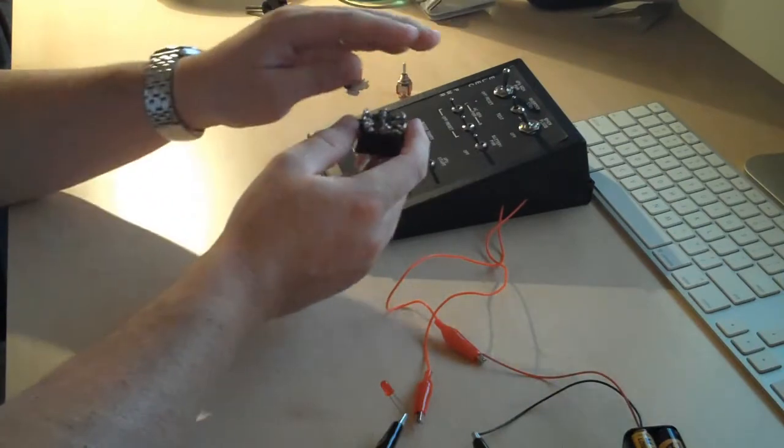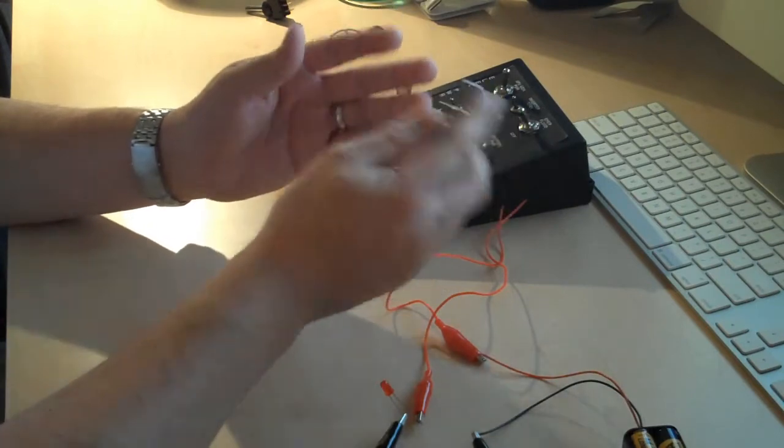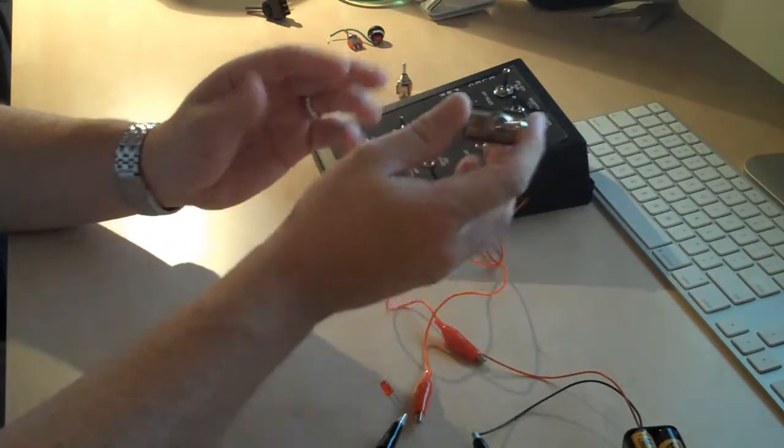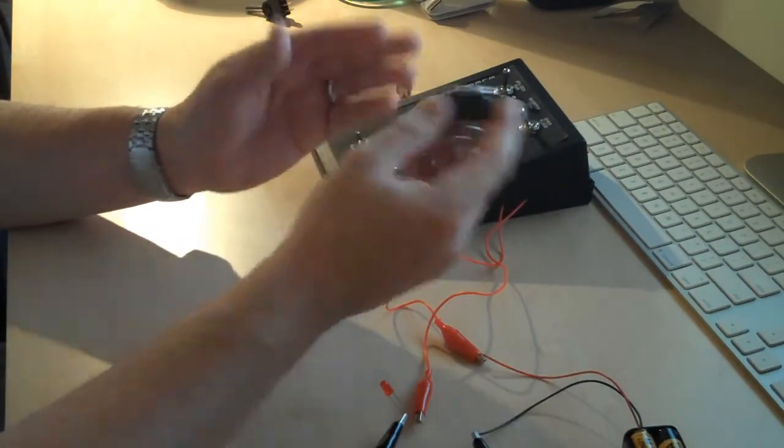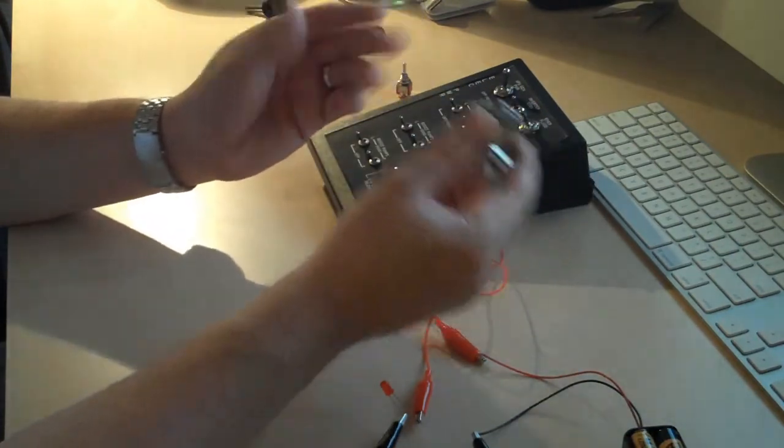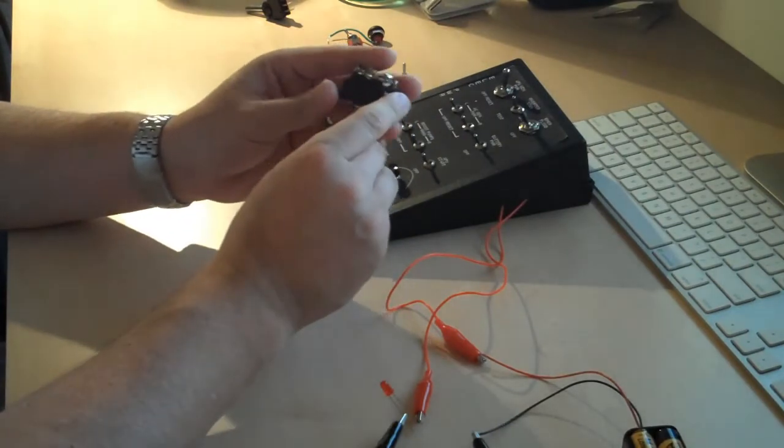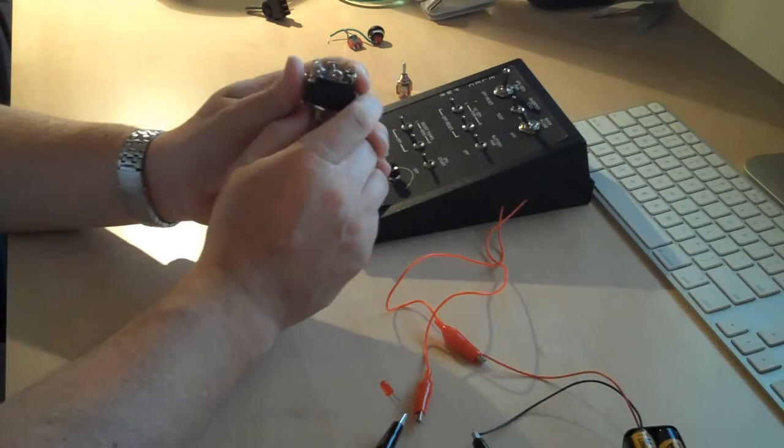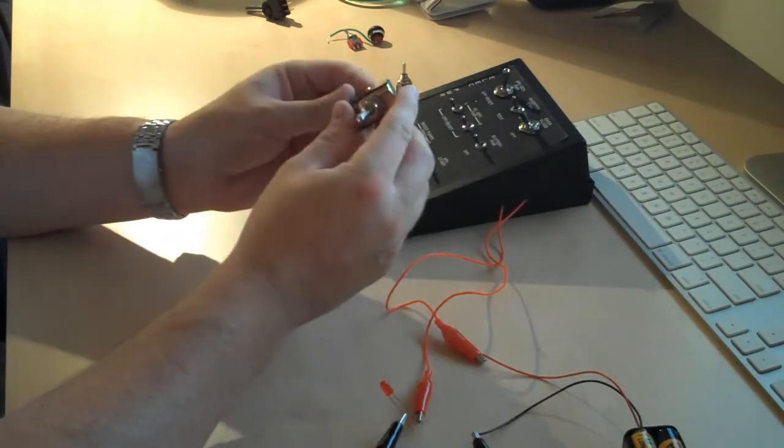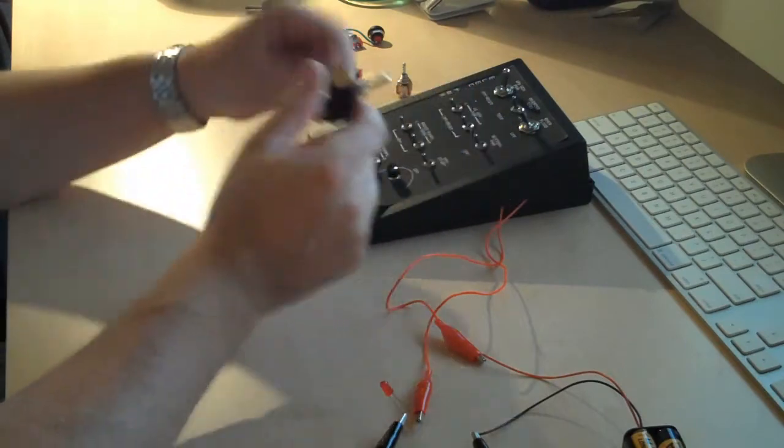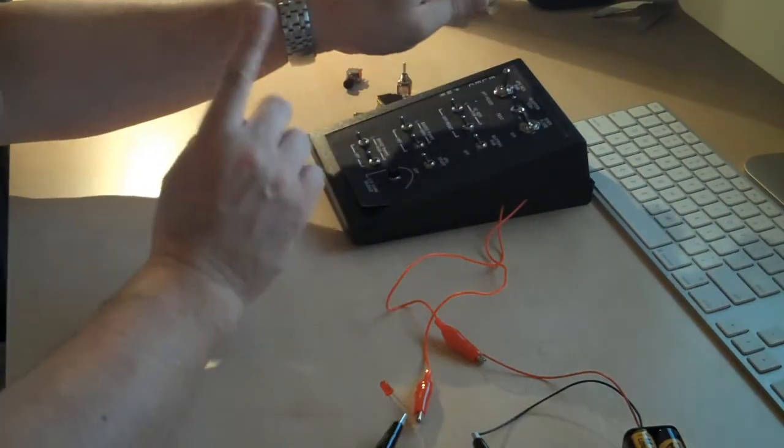It's just a matter of whether you want it to be a single throw or double throw. In switch terminology they often call double throw DT switches and single pole SP. So an SPDT would be a single pole double throw switch. SPST would be a single pole single throw switch.